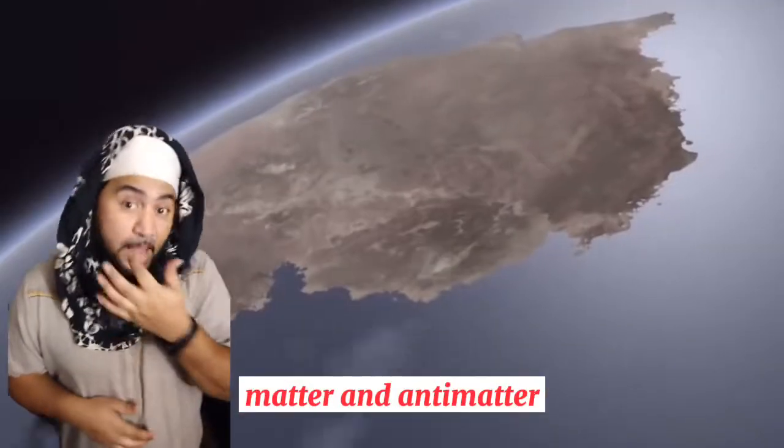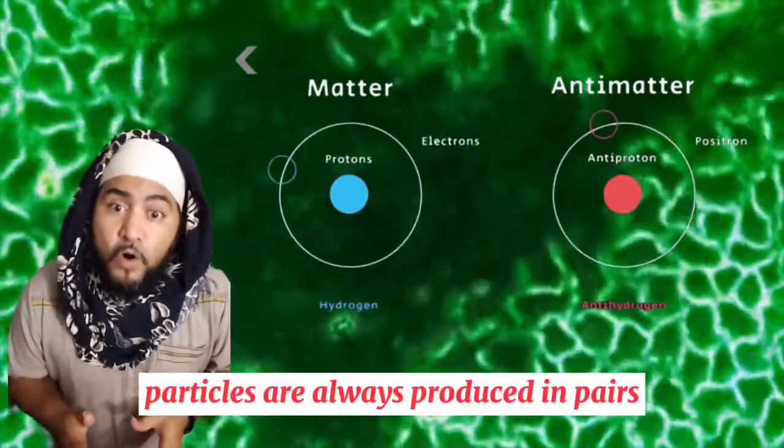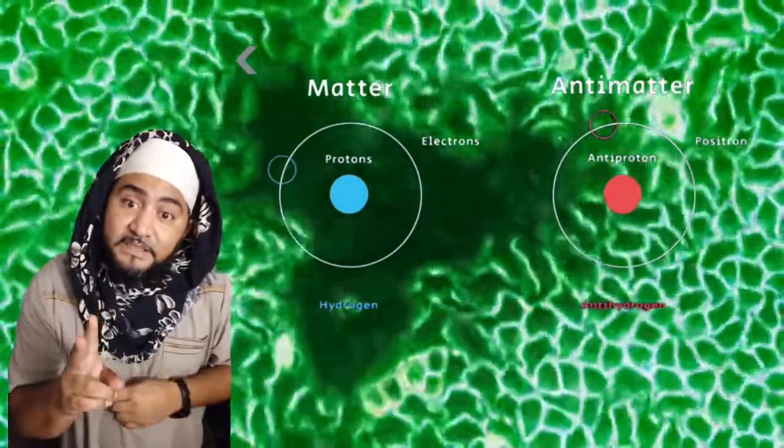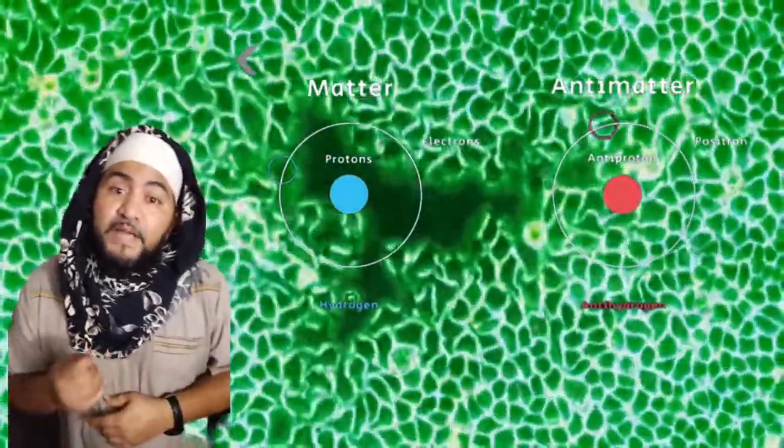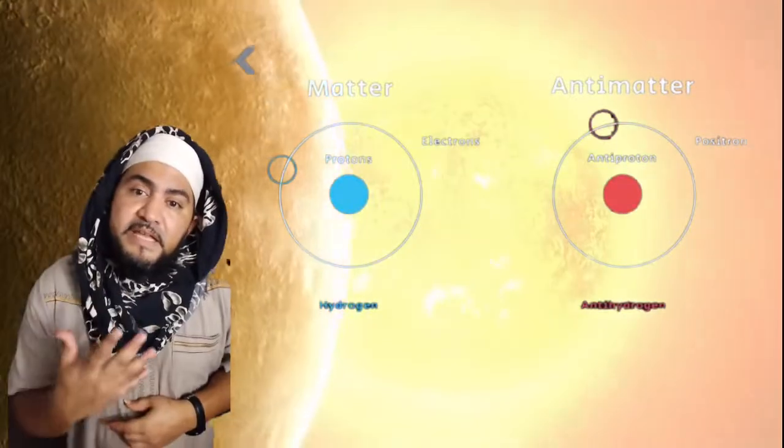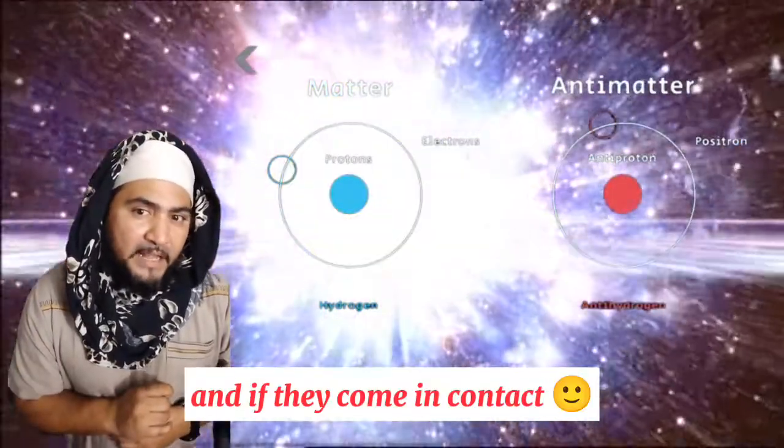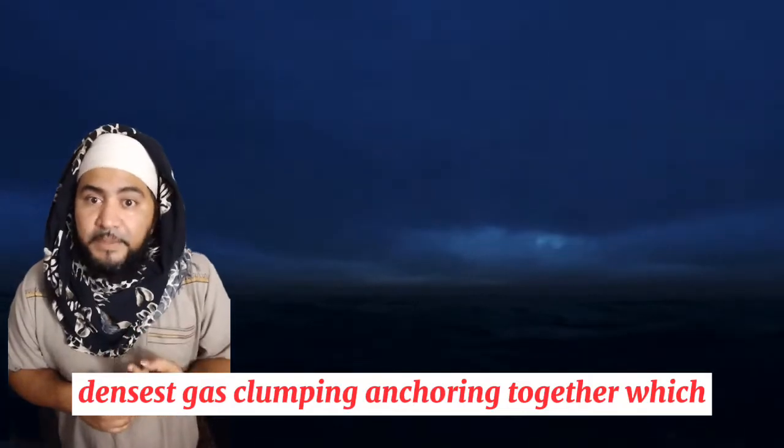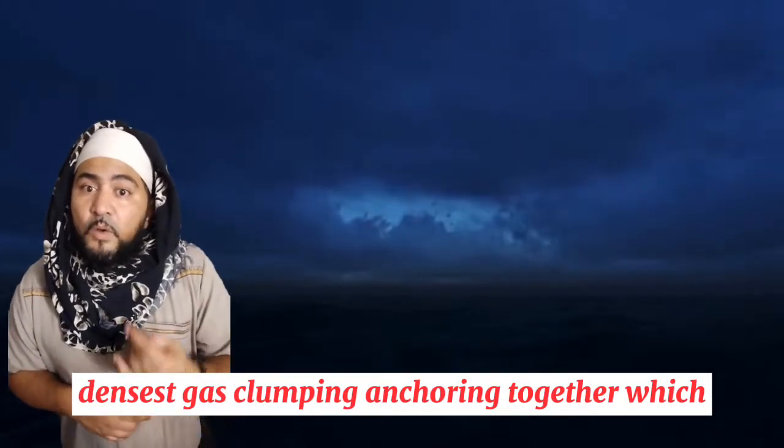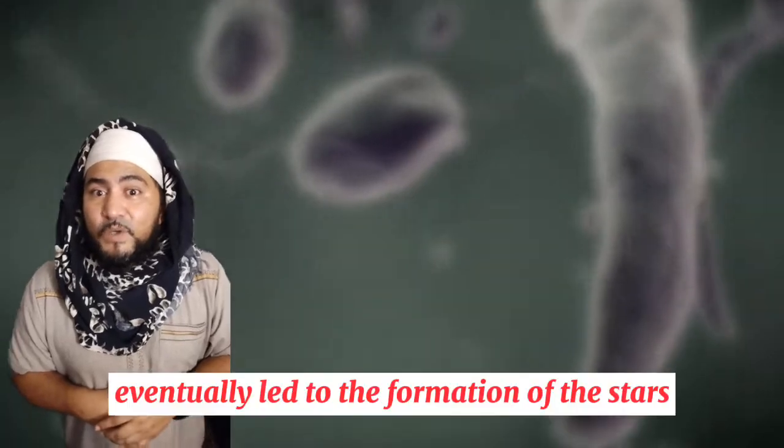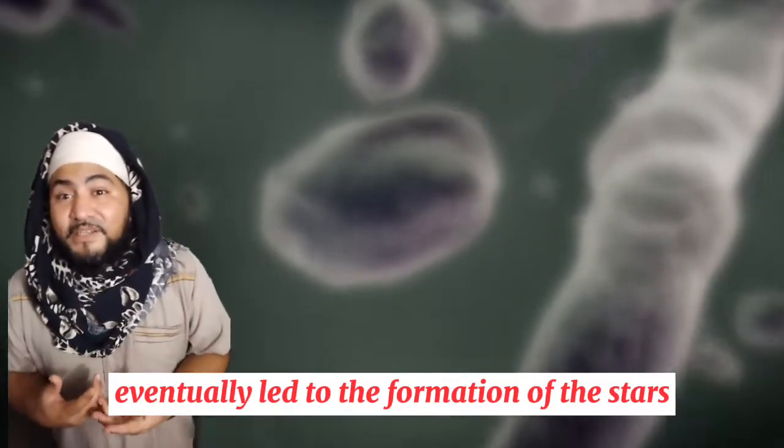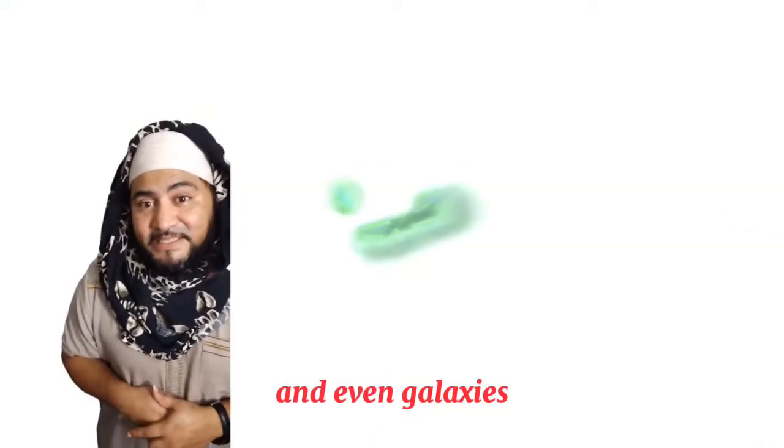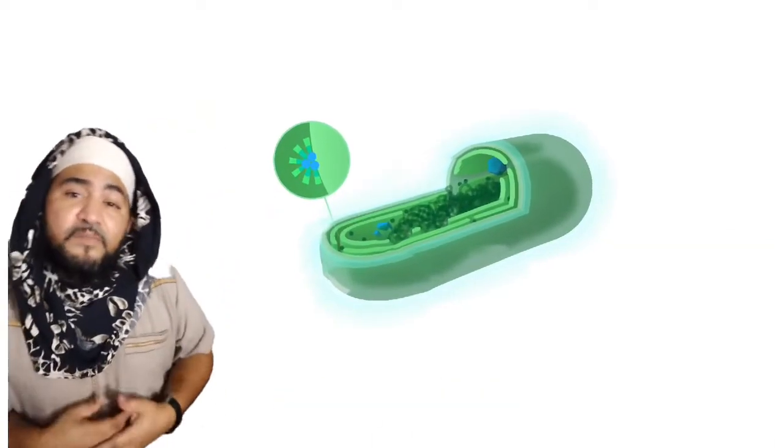Matter and anti-matter particles are always produced in pairs. And if they come in contact, they annihilate in pairs. After this, gas began clumping and anchoring together, which eventually led to the formation of the stars and even galaxies.